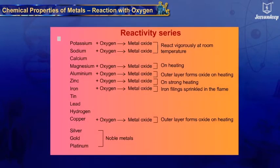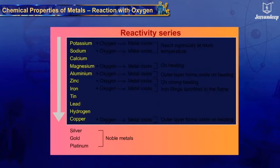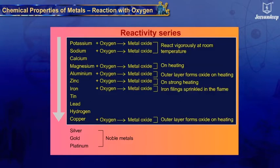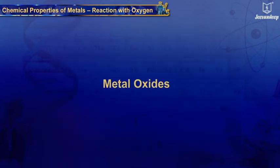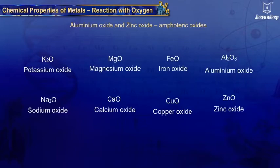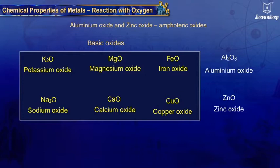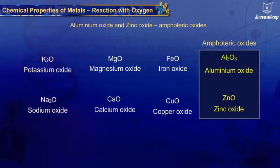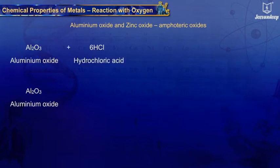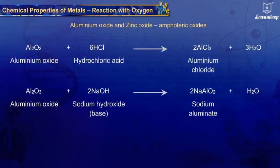We can see that the reactivity of metals decreases from potassium to copper. Metal oxides are usually basic in nature, but some metal oxides like aluminum oxide and zinc oxide react with acids as well as bases, producing salt and water. Hence they are known as amphoteric oxides.